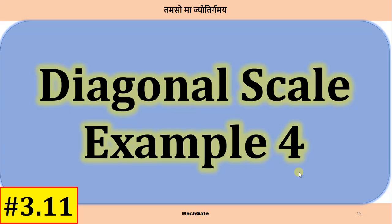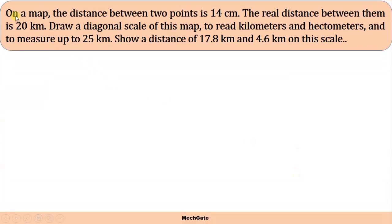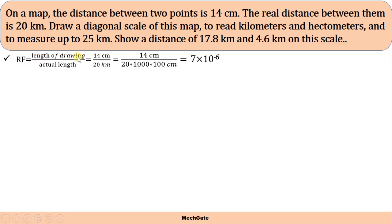Welcome back to the channel. Let's solve one more problem related to the diagonal scale. On a map, a distance between two points is 4 centimeter and the real distance between them is 20 kilometer. RF is given as length of drawing divided by actual length: 14 centimeter divided by 20 kilometers. If we simplify this, we will get our RF.